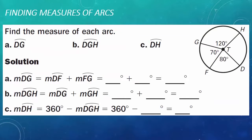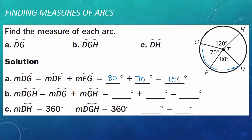Example number one: finding measures of arcs. First, we need to find the measure of arc DG, which is this arc measure over here that goes all the way through. So I know that the measure of arc DG is the measure of arc DF plus the measure of arc FG. So it's 80 degrees plus 70 degrees, which gives me 150 degrees.